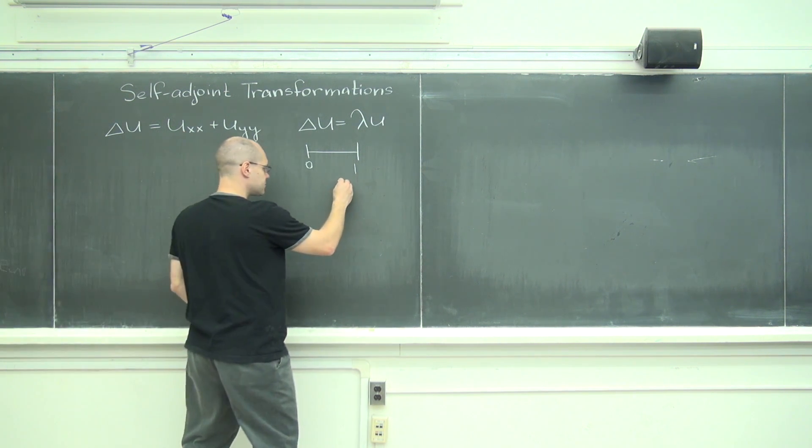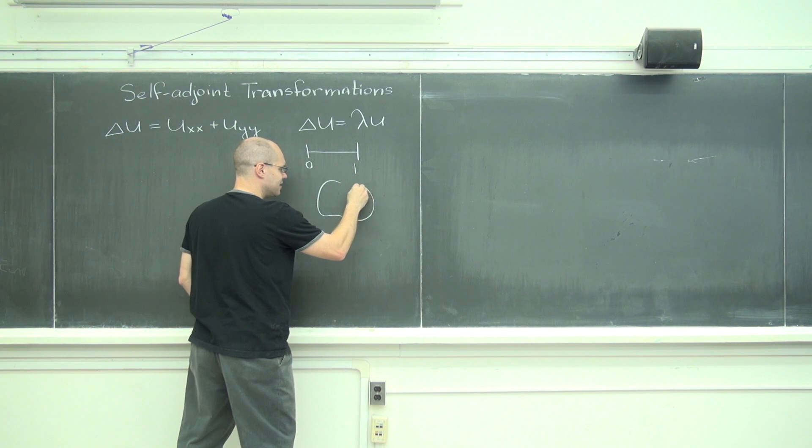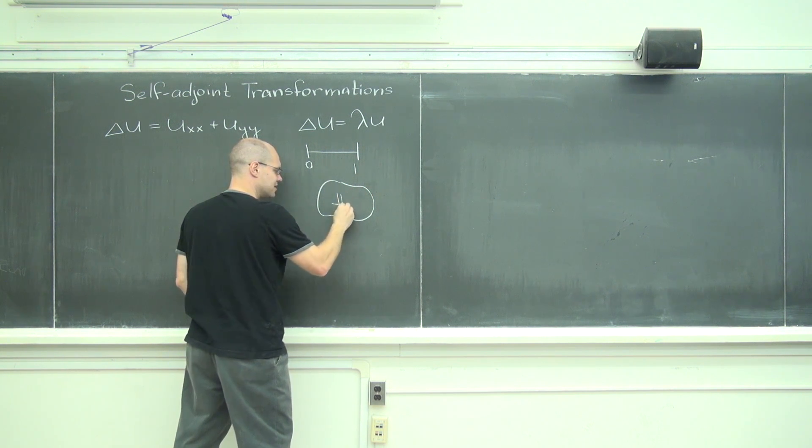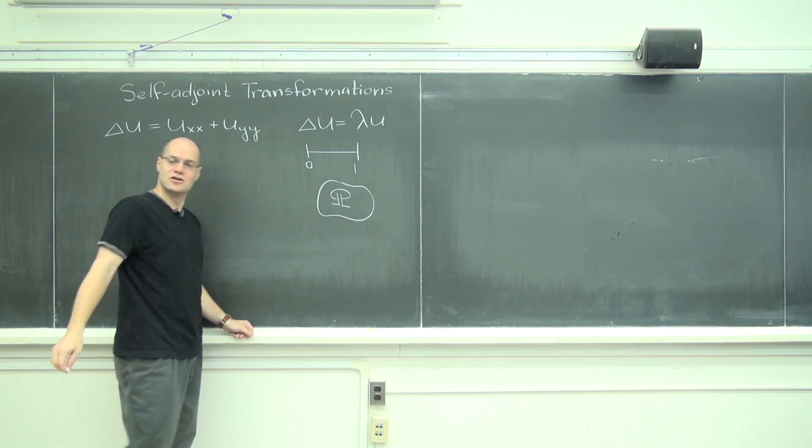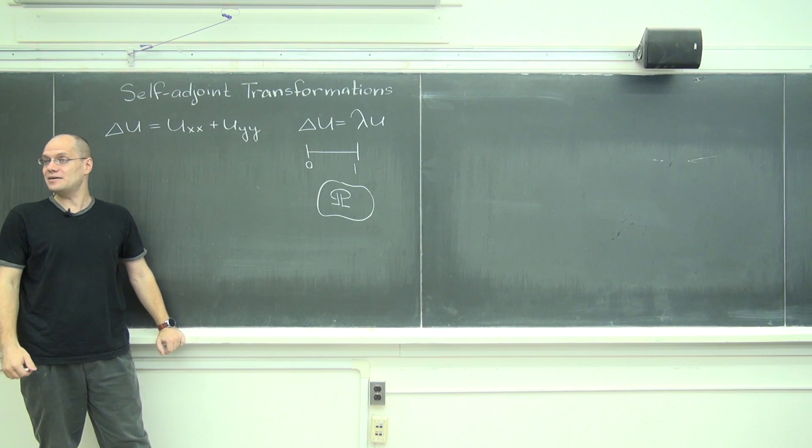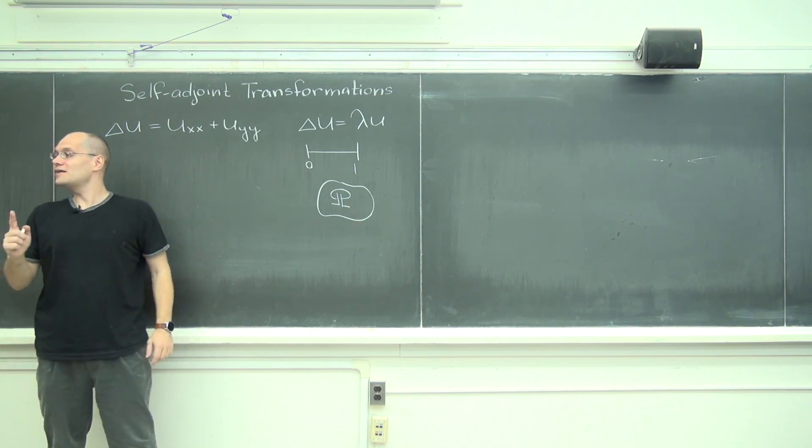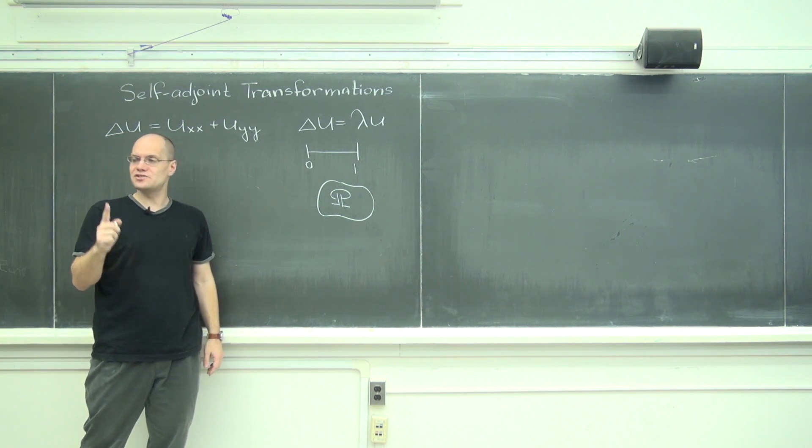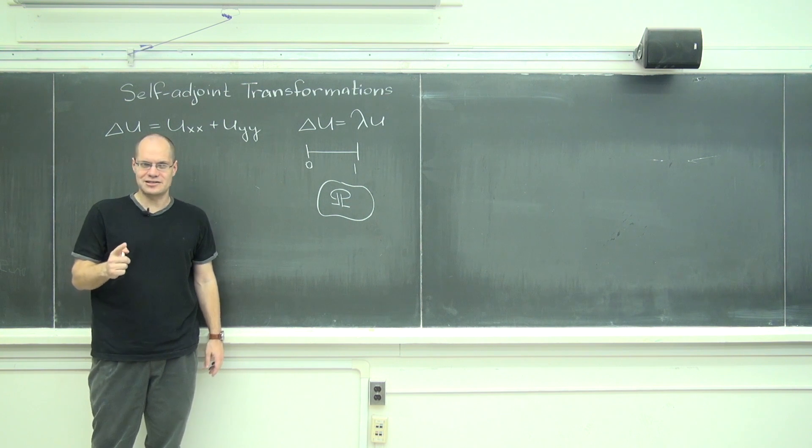In one dimension, in which case the Laplacian is simply the second derivative with respect to x and nothing else. Or you can ask it on a complicated two-dimensional domain, so we can consider this problem in one dimension, two dimensions, three dimensions, n dimensions. And in all cases, we'll restrict ourselves to the case of zero boundary conditions.